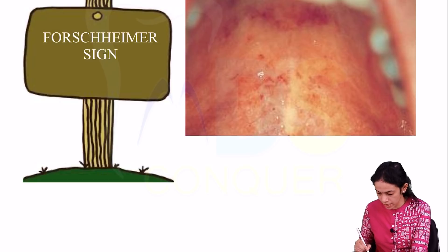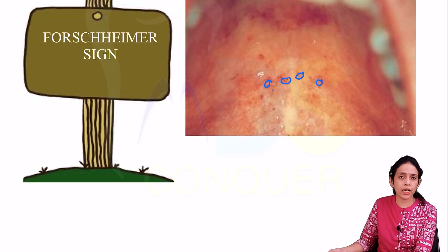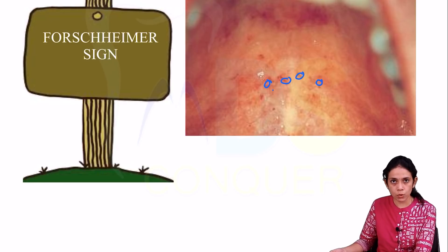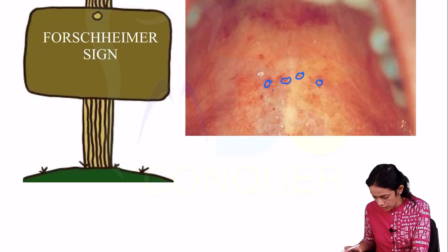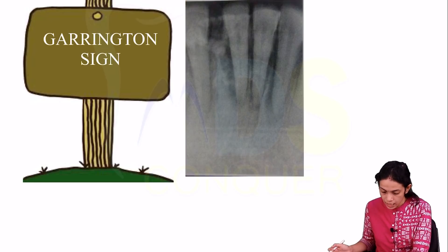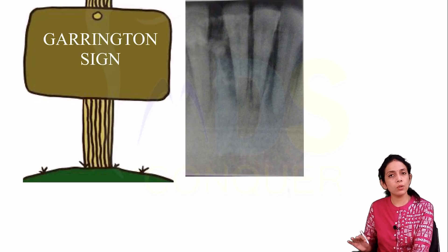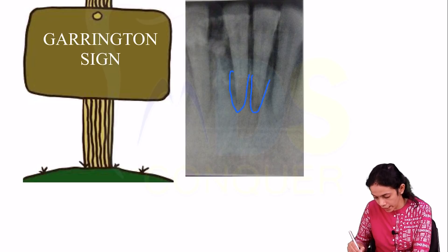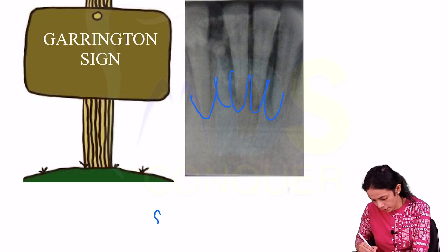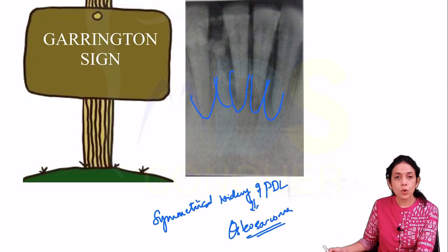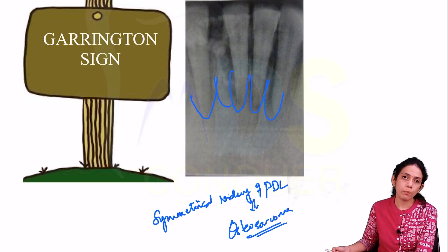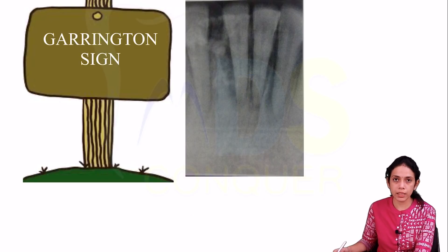Next is the Forchheimer's sign, where small red spots are seen at the junction of the hard and soft palate, seen with German measles (rubella). Next is the Garrington sign, characterized by symmetrical widening of the PDL space, seen with osteosarcoma.